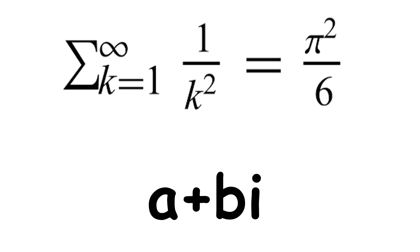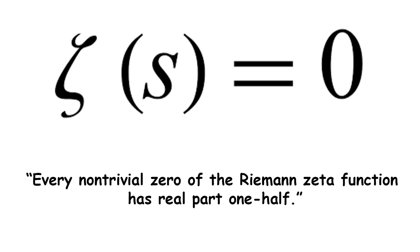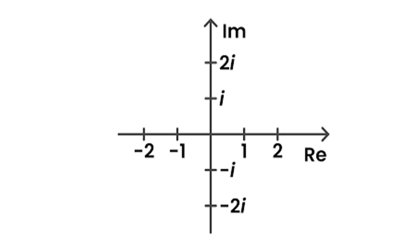Specifically, the Riemann Hypothesis is about when zeta of s equals zero. The official statement is, every non-trivial zero of the Riemann zeta function has real part one-half. On the plane of complex numbers, this means the function has a certain behavior along a special vertical line. The hypothesis is that the behavior continues along that line infinitely.